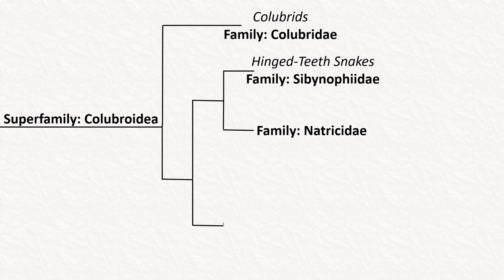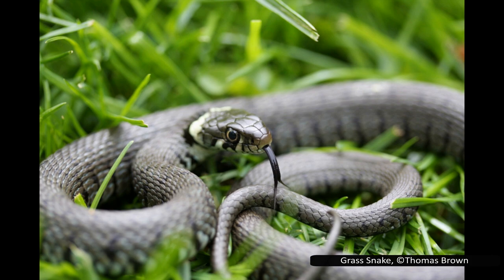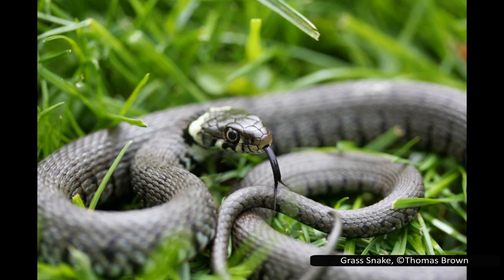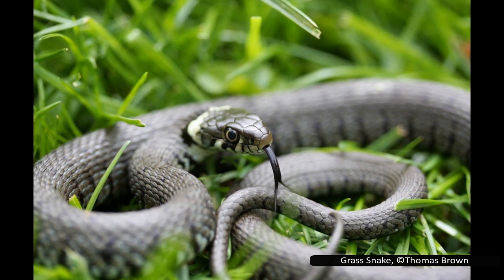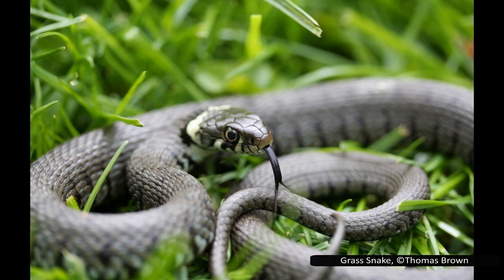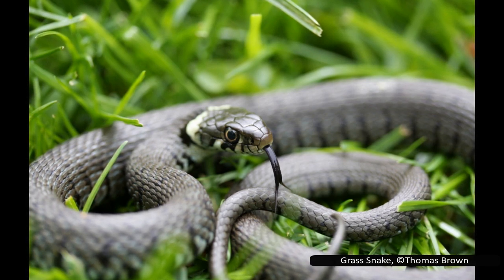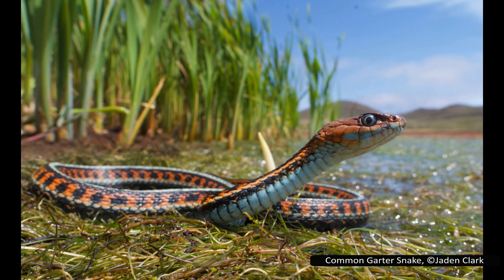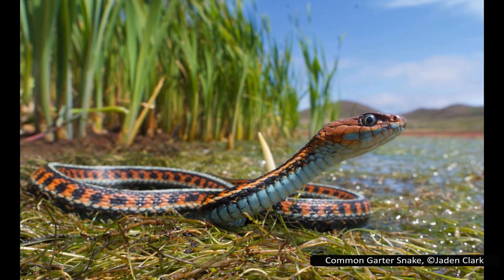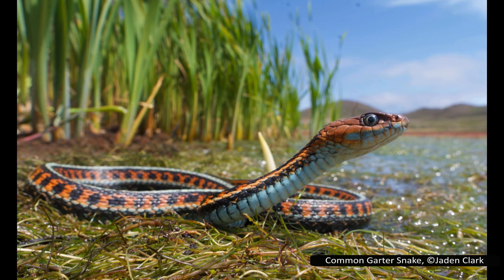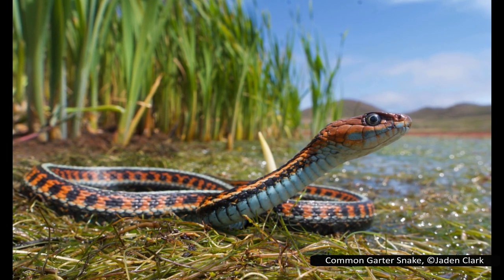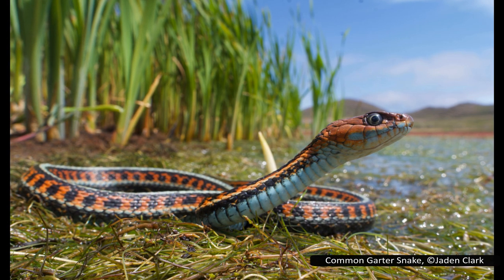The next family is Natricidae, which does not have a common name but includes the garter snakes, the North American water snakes, and the European grass snakes. Some Old World species are known as keelbacks. There are 36 genera with over 260 species, most diverse in North America but also found in Central America, Asia, Europe, Africa, and with a single species in Australia. Most species are semi-aquatic and feed on fish and amphibians, but a few are semi-fossorial or live in leaf litter and feed on invertebrates. Most species are harmless to humans, although two species are known to inflict life-threatening bites — including the tiger keelback, mentioned earlier as one of the few snakes that is truly poisonous as well as venomous.